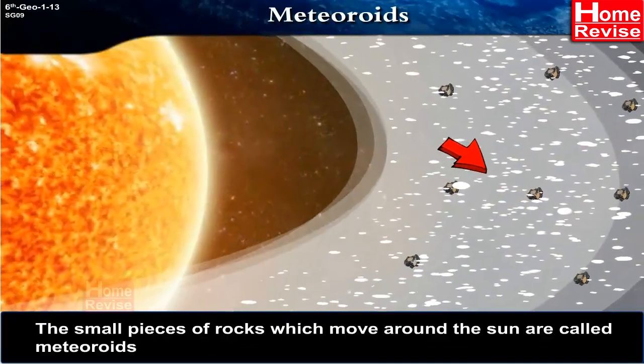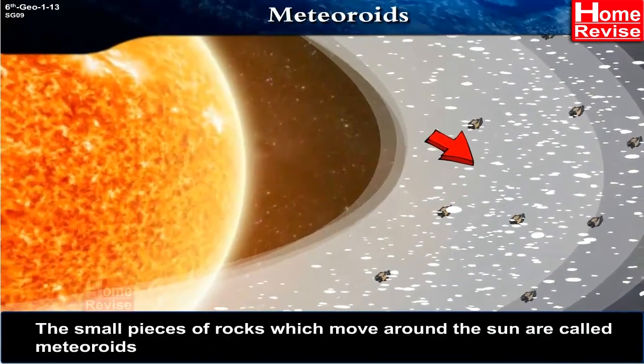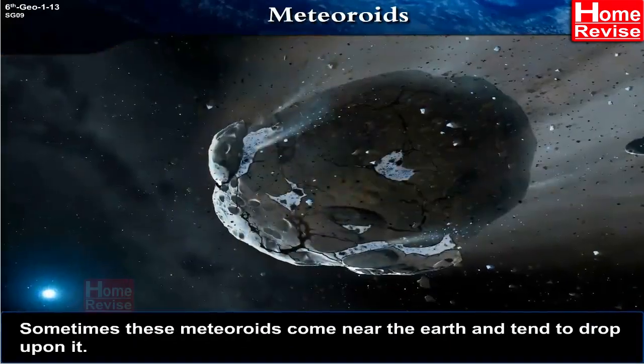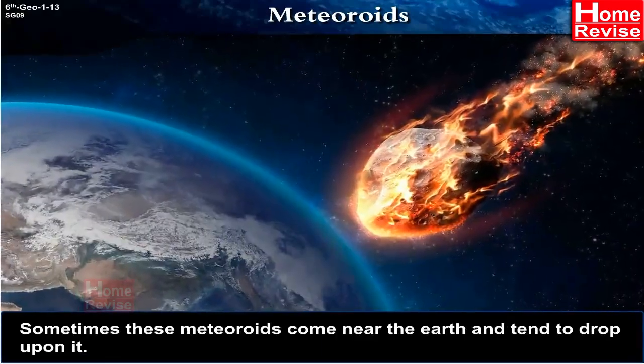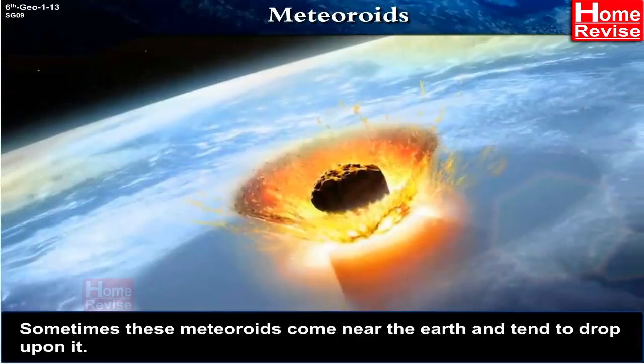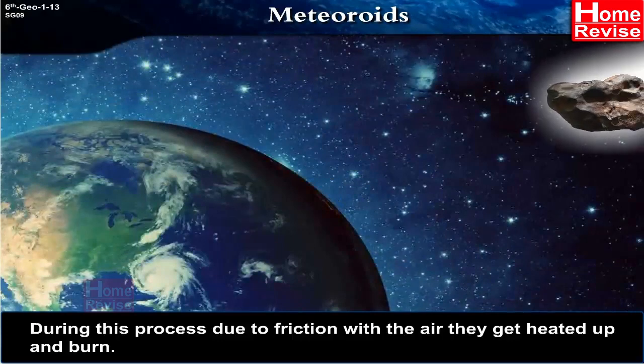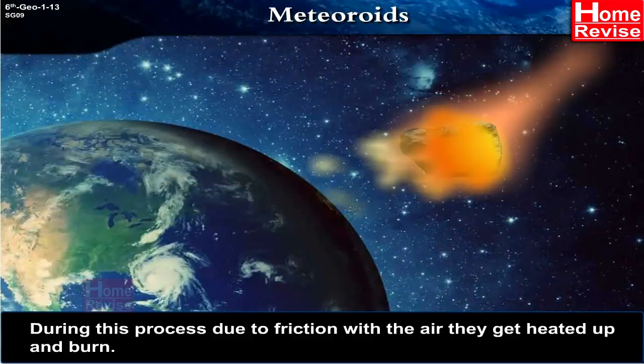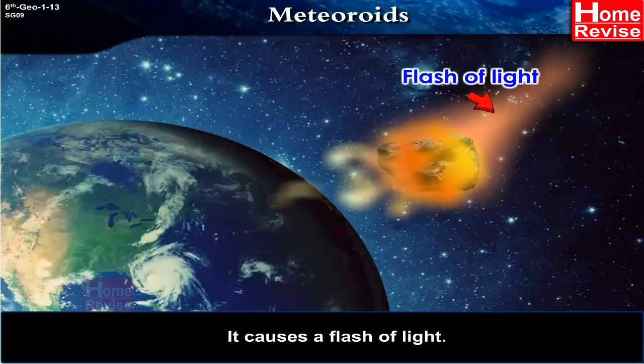The small pieces of rocks which move around the Sun are called meteoroids. Sometimes these meteoroids come near the Earth and tend to drop upon it. During this process, due to friction with the air, they get heated up and burn. It causes a flash of light.